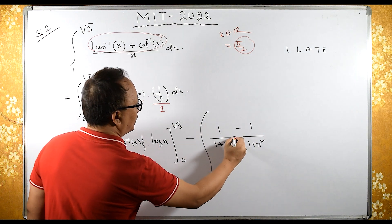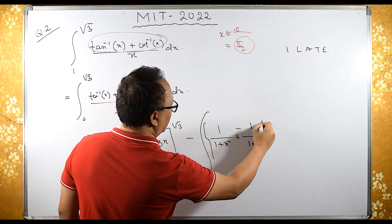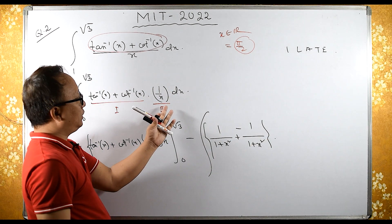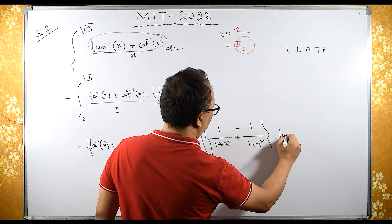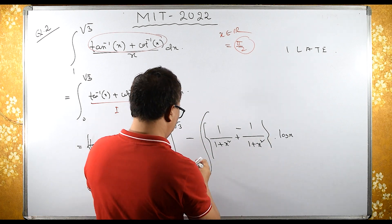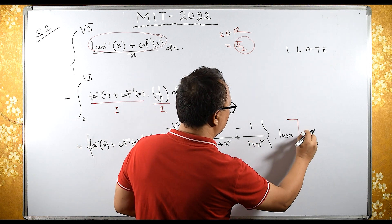We have plus here and plus here. Then times integration of the second function, which is log of x, and we need to integrate with respect to dx.